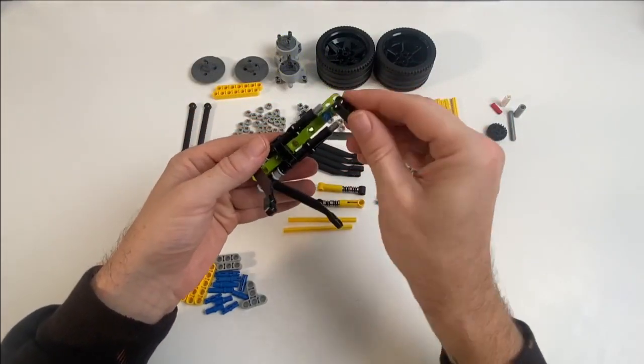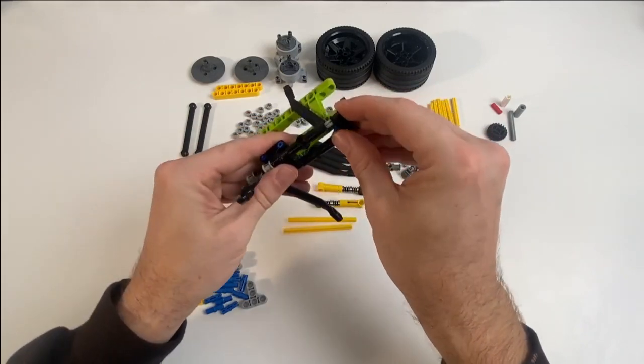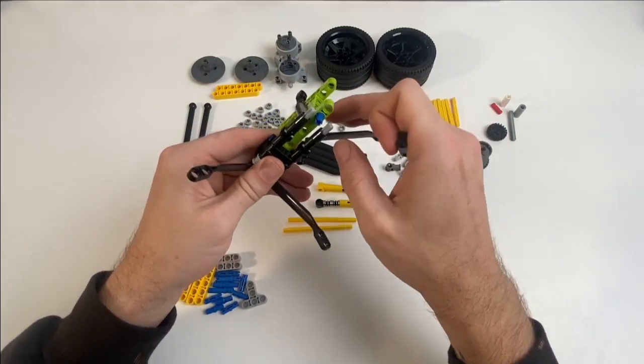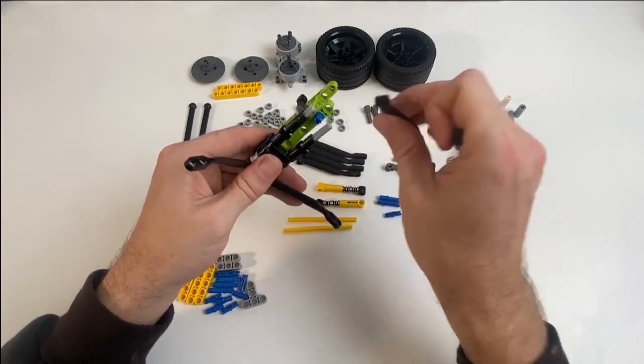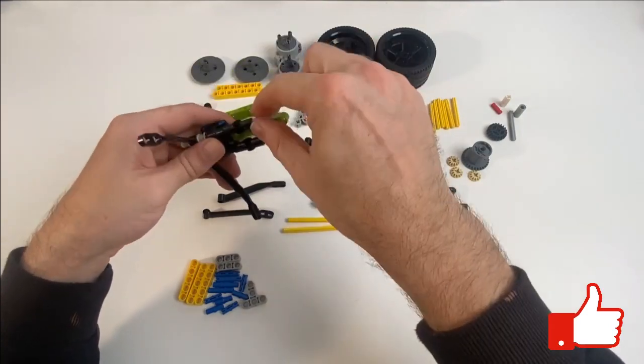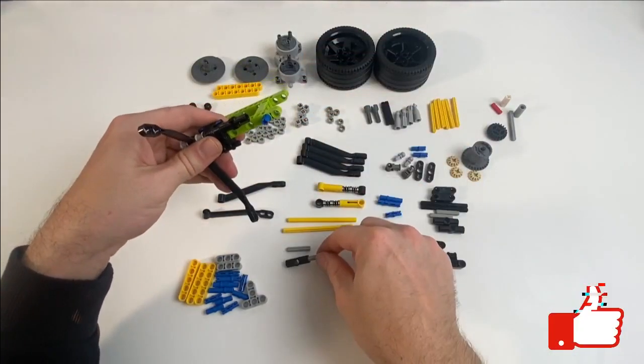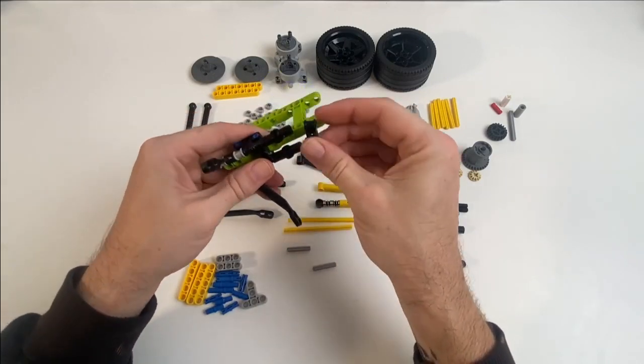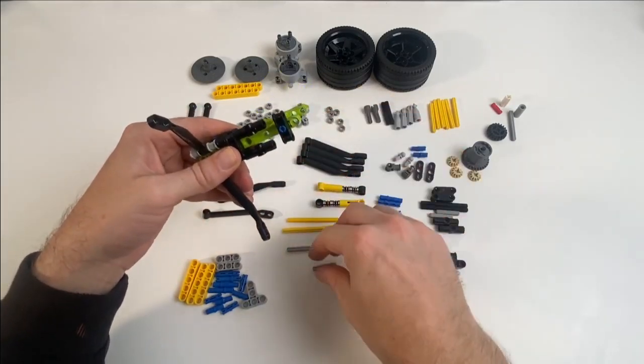So I actually put these bits on in the wrong order. If you try and do it like this, you might end up bending or breaking some of the components. So I just went ahead and took these off and redid them. When I come to do the other side, you'll see me do this in the correct order. It shouldn't make too much difference to the overall build, but it just clicks in a lot easier there.